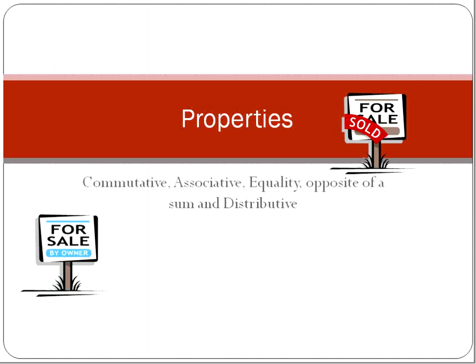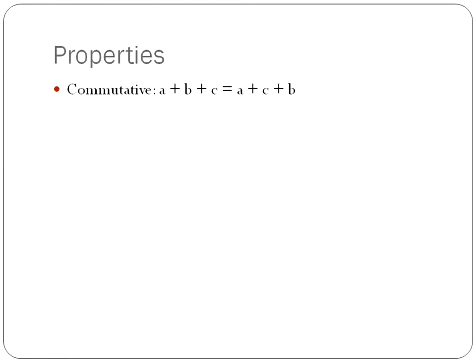We aren't going to be talking about the type of properties that you would buy or sell, but mathematical properties: commutative, associative, property of equality, the opposite of a sum, and the distributive property. So get out your notebooks because this is going to be a lot of vocabulary, and hopefully it can help give you some ways of remembering it.